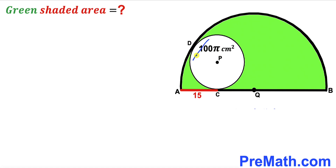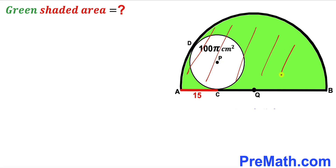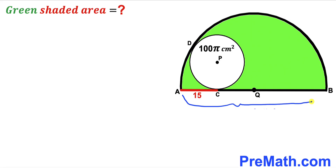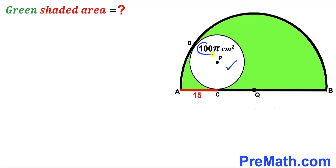Welcome to pre-math. In this video we have a white circle with center P fully inscribed in a semicircle with center Q, such that C and D are the points of tangency. AB is the diameter of this semicircle, segment AC is 15 centimeters long, and the area of the white circle has been given as 100π cm². Our task is to calculate the area of the green shaded region.